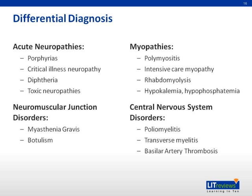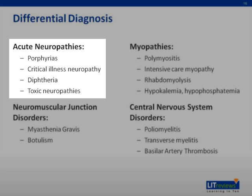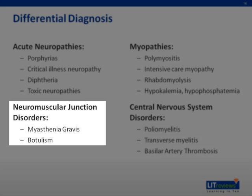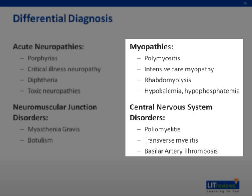Differential diagnosis of GBS includes other causes of acute neuropathy such as porphyria, critical illness neuropathy, diphtheria, and other toxic neuropathies. Neuromuscular junction disorders like myasthenia gravis and botulism can mimic GBS. Other differentials include acute myopathies and certain central nervous system disorders like poliomyelitis, transverse myelitis, and basilar artery thrombosis.